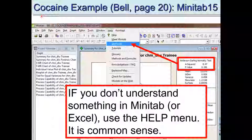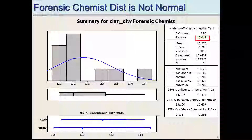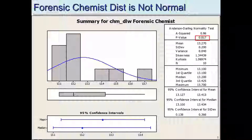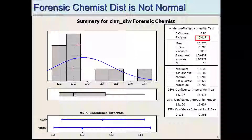Now let's look at the forensic chemists. Their P-value is 0.017, so we reject the null — the forensic chemists' data is not normally distributed. Looking at the histogram with the blue normal distribution curve overlaid, you see the forensic chemists got essentially one value in one bin, one in another, and four identical values in a different bin. That's not what a normal distribution looks like — a normal distribution has most values in the middle and fewer on the wings.